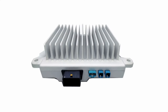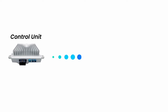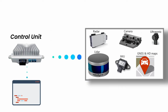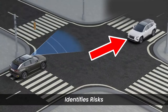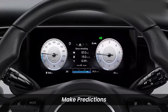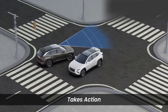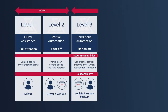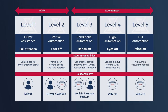The system uses a control unit to process the data received from the sensors and compares it against pre-programmed rules and algorithms. This enables the system to identify potential risks, make predictions, and take appropriate actions. It is often categorized into different levels based on the extent of automation and the capabilities it offers.